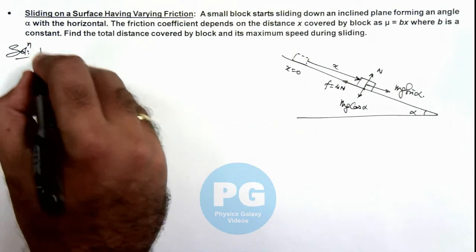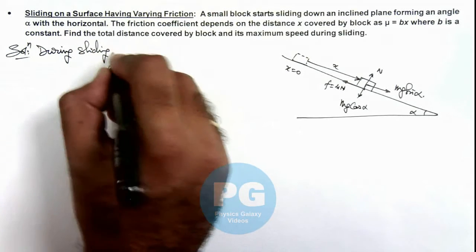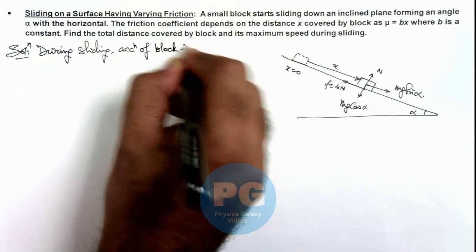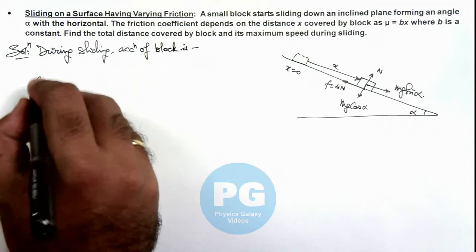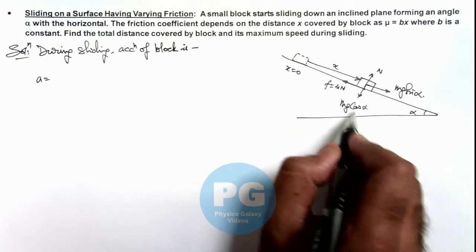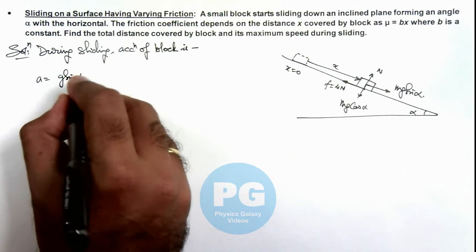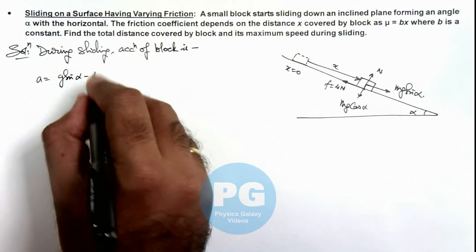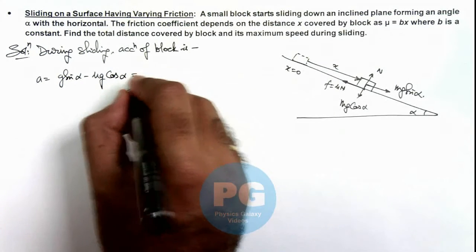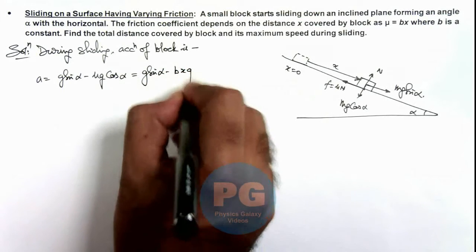During sliding, the acceleration of the block can be written as mg sine alpha minus mu times mg cosine alpha, divided by m. This simplifies to g sine alpha minus mu g cosine alpha. Substituting mu equal to bx, the acceleration becomes g sine alpha minus bxg cosine alpha.